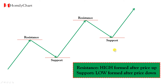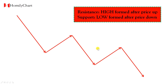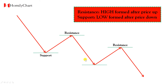When in a downtrend, it's the same — the highs and the lows. The highs formed after price goes up are called resistance, and the lows formed after price goes down are called support. Because when price goes up to a place and cannot go further but turns downwards, that means this place has resistance.